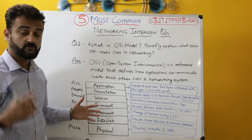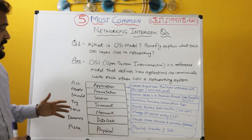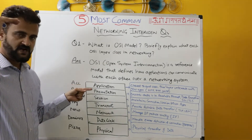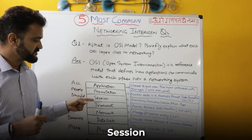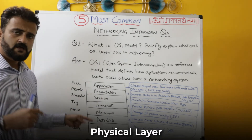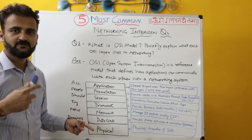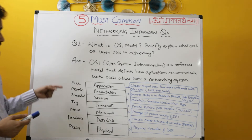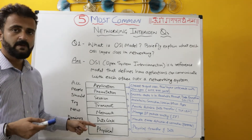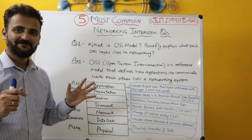OSI has seven layers — it is a logical seven-layer model. Starting from the top: Application, Presentation, Session, Transport, Network, Data Link, and Physical layer. We have a famous acronym to help remember this: 'All People Should Try New Domino's Pizza.' It will help you remember the layers.